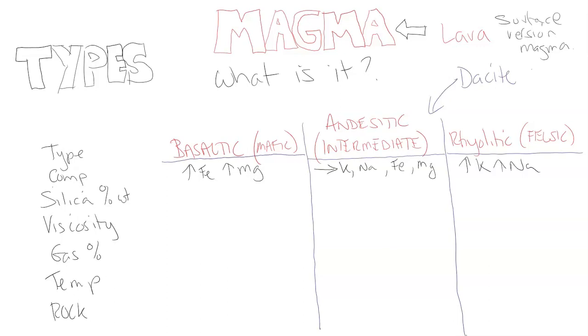So basaltic magma will be low in sodium and potassium. Now, in terms of percent weight of silica, which is a very important compound to discuss. So let's start with our basaltic. Basaltic is 45 to 55%. Rhyolitic is going to be 65 to 75%. And obviously, intermediate will be our 55 to 65%. So even the basaltic, mafic, magma still has 45% of silica. So a lot of the composition is based on our oxygen and our silicon.